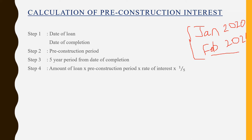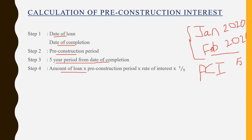As soon as the construction is over, the pre-construction interest can be claimed for a period of five years from the date of completion. Before calculating pre-construction interest, you have to first identify whether there is pre-construction interest in the problem. If in a question both the date of loan and date of completion are given, you have to calculate pre-construction interest. Then you have to calculate the pre-construction period and the five-year period from the date of completion, and finally calculate pre-construction interest.